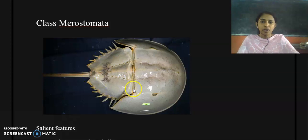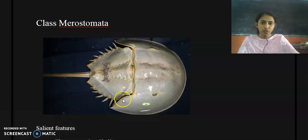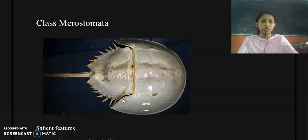Here I have provided the diagram of Limulus. Limulus is a marine organism; it is also known as king crab or horseshoe crab, because it has got the shape of a horseshoe. It is also one of the important members of Class Merostomata because it is known as a living fossil.